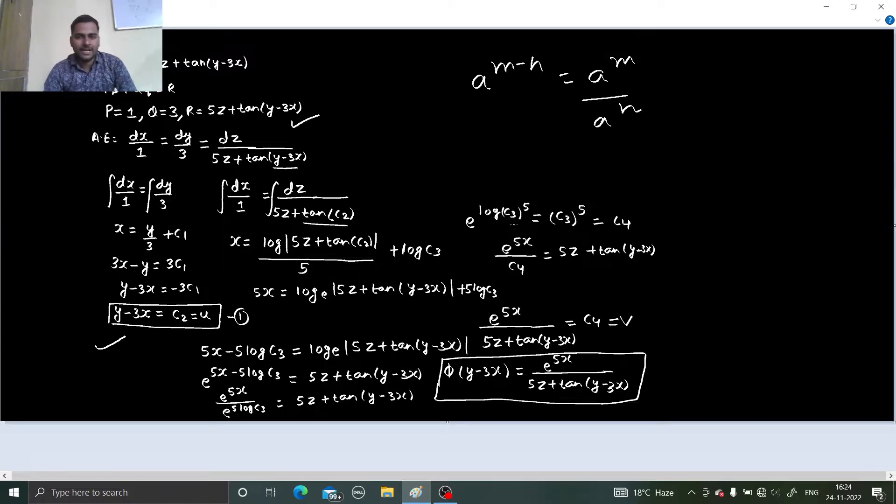You know a power m minus n is nothing but a power m divided by a power n. And also here I used this property e power log x to the base, this you will end up getting x. And constants are constant. If constant is c4 you can always name this as c5. That is truly on your side. Because at the end you are not going to show them the constant.